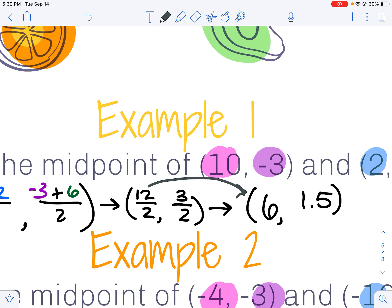3, or negative 3 plus 6 rather gives me positive 3, cut in half gives me positive 1.5.